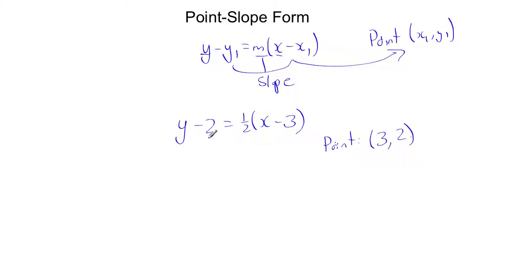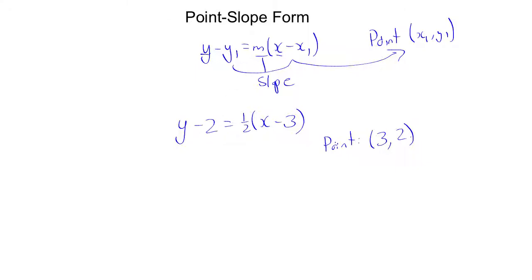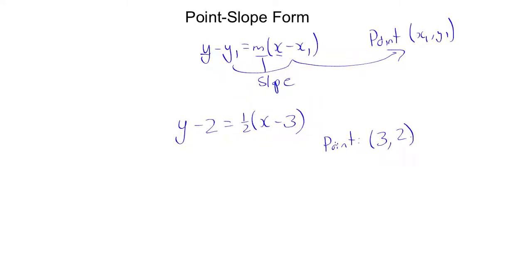Now the nice thing is, we can change anything in point-slope form to slope-intercept form, and vice versa. But we'll mostly be taking these point-slope forms, and what I'm going to be doing is I'm going to be finding equations of lines based off of point-slope form, and then putting them into slope-intercept form.